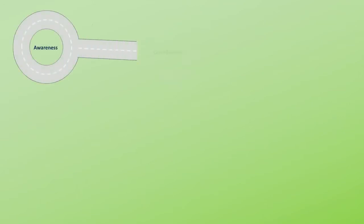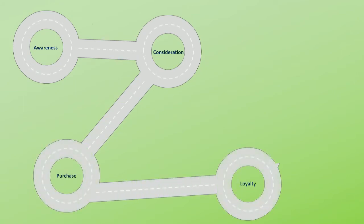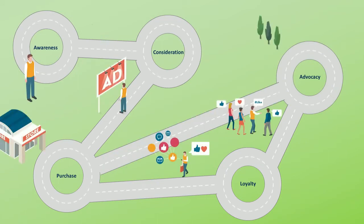I wanted to begin today by defining what we mean by a customer journey. The customer journey is the sum of all of the touch points a customer has been through with your brand — it's a term often applied to the process of a customer moving through the traditional buying cycle. It tells the story of the customer's interactions with your brand. The five parts of a journey everyone agrees on are awareness, consideration, purchase, advocacy, and loyalty.